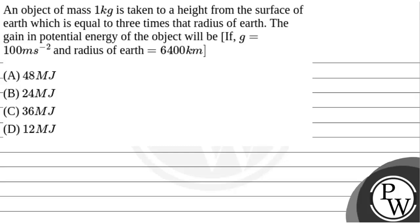Hello. Let's read the question. An object of mass 1 kg is taken to a height from the surface of earth which is equal to 3 times the radius of earth. The gain in potential energy of the object will be, if g is equal to 10 m/s² and radius of earth is equal to 6400 km.